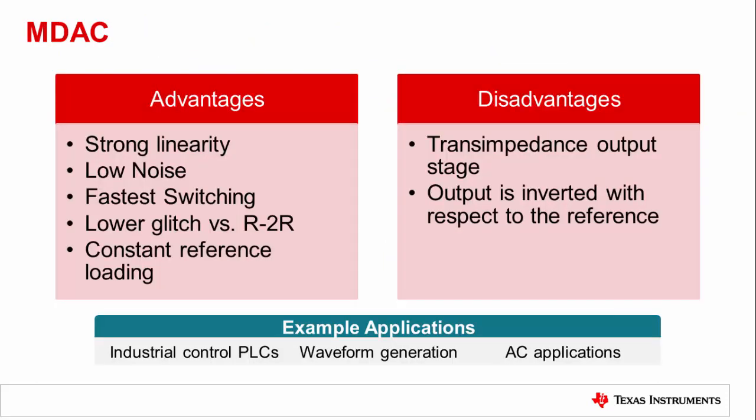MDACs are the highest performance precision DACs when paired with the right output amplifier. They have strong linearity due to the advanced trimming techniques that are available with the architecture, and noise contribution is minimal due to the lack of an internal output buffer coupled with the low ladder impedance. Also, unlike the R2R DAC, the reference observes a constant load, so it does not require a reference input buffer. An MDAC does require a trans-impedance buffer at the output, but this allows the designer to choose the best output amplifier for their particular application.